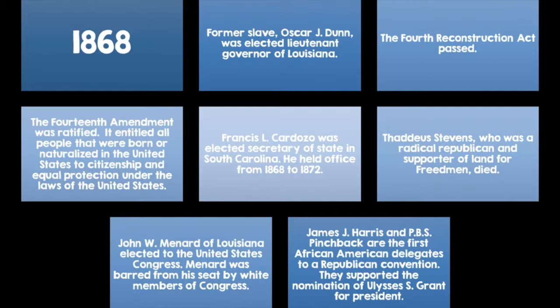John W. Maynard of Louisiana was elected to the United States Congress but was barred from his seat by white members of Congress. James J. Harris and PBS Pinchback became the first African American delegates to a Republican convention, supporting the nomination of Ulysses S. Grant for president.